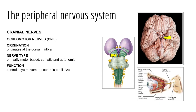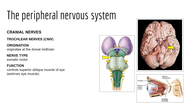Cranial nerve three is the oculomotor nerve. These fibers extend from the ventral midbrain through the superior orbital fissures. The oculomotor nerve is primarily motor-based, controlling some extrinsic eye muscles via the somatic motor pathway, as well as controlling lens shape and constricting the iris through the autonomic motor pathway. Cranial nerve four is the trochlear nerve, extending from the dorsal midbrain into the ocular orbits via the superior orbital fissures to innervate the superior oblique muscle, the most important eye muscle for directional movement.